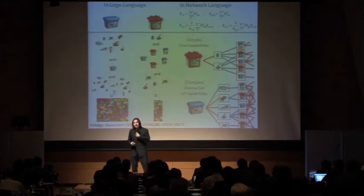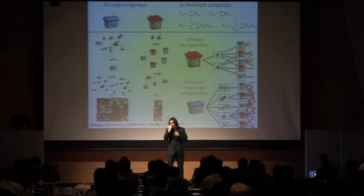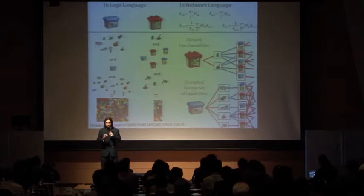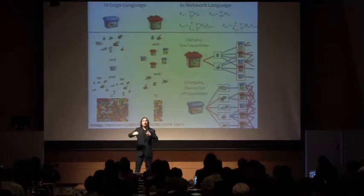Each one of these products is made of a collection of all these different person bites that different people have. The first approximation would be to say, if we have a country that has lots of knowledge, lots of person bites distributed among its population, that country is probably more likely to be able to make a large number of different products.